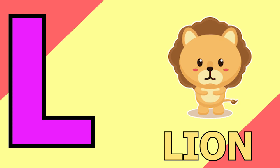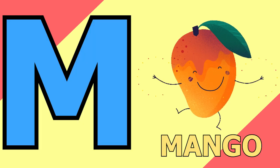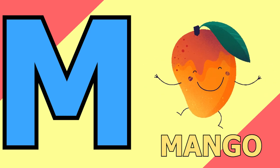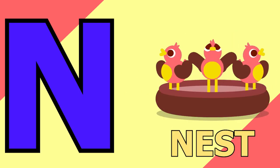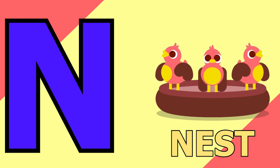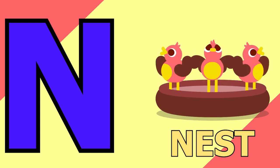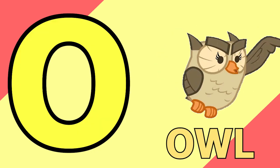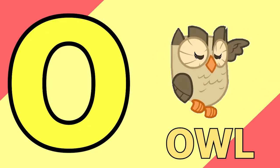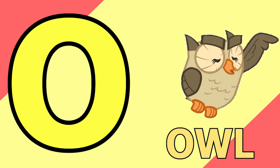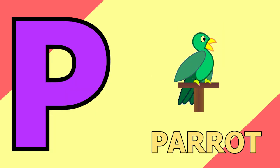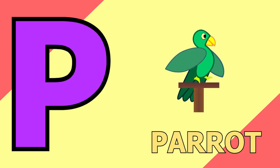M for mango, mango means aam. N for nest, nest means ghosla. O for owl, owl means ullu.